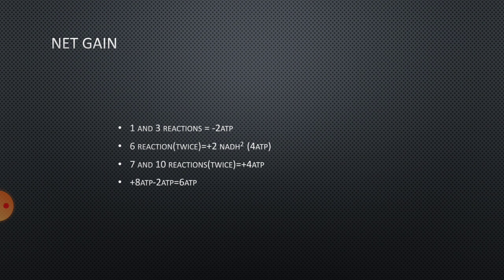The seventh and tenth reactions are called substrate level phosphorylation reactions because ATP are directly released. Whereas in the sixth reaction, ATP are not directly released — instead NADH2 is released. NADH2 must be changed into ATP later on during the electron transport system.